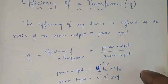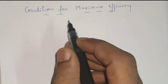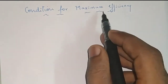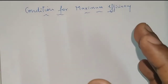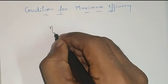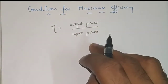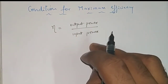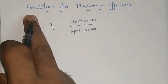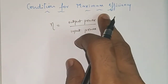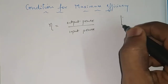This is about efficiency of a transformer. Next there is a derivation to find out the condition for maximum efficiency. We have seen what is efficiency of a transformer, so I will write down the formula for efficiency. According to the definition, efficiency is equal to output power divided by input power — this is the base formula to derive a condition for maximum efficiency.